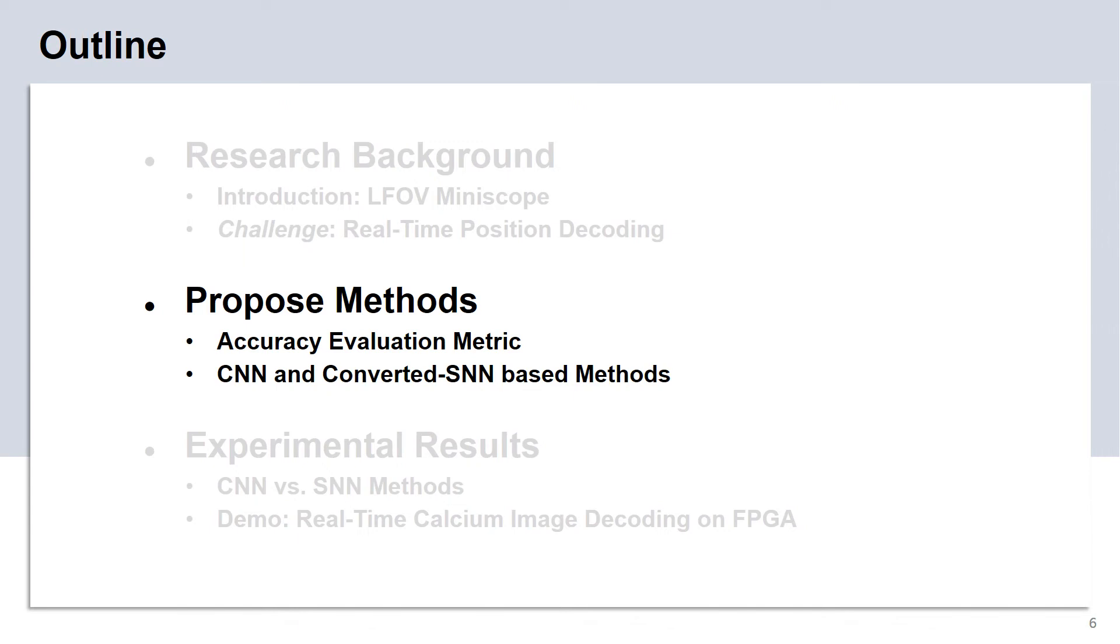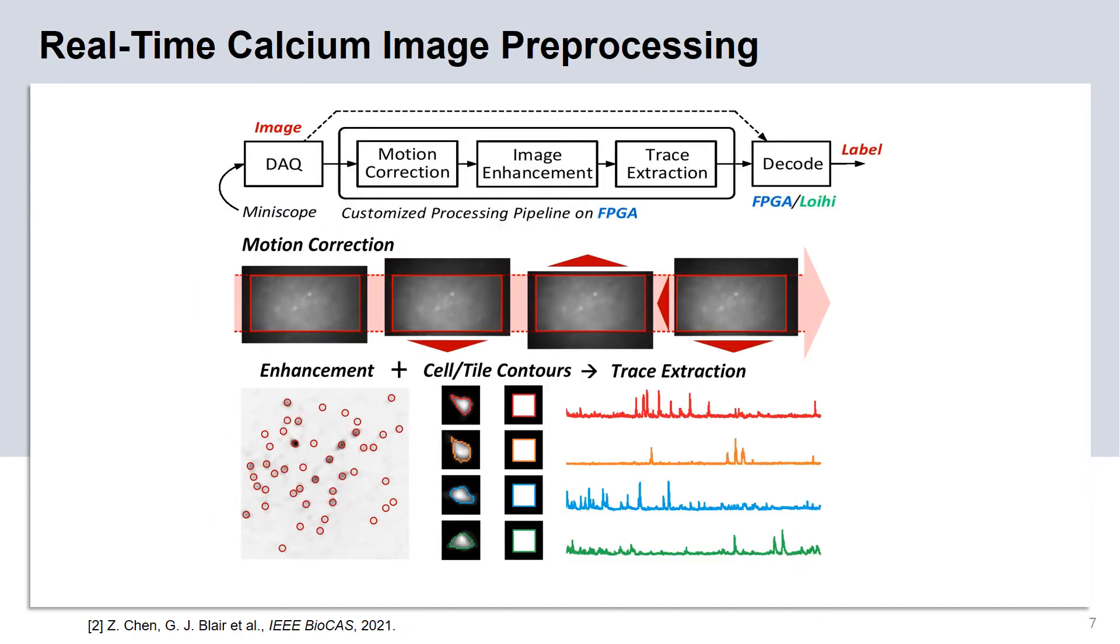Next, I'll talk about our proposed methods. I'd like to start by first introducing our past work on the real-time calcium image preprocessing and trace extraction. We proposed an FPGA implementation that can take calcium images from the miniscope through the data acquisition hardware, and it can perform real-time motion correction, image enhancement, and trace extraction through customized FPGA acceleration. The traces can be extracted from either the cell contours or the tile contours through accumulating pixel values under the contour binary masks. We can perform the decoding from the extracted traces or directly from the raw calcium images. Later on in this presentation, we will have more discussion on the comparison between these two different approaches.